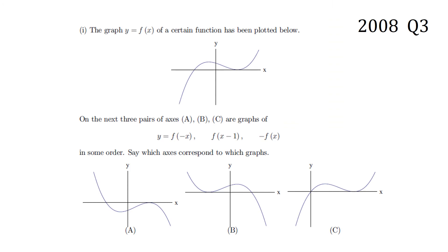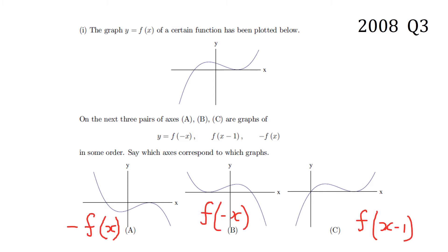Another longer question from the 2008 paper. Given a curve sketch of f(x), we must identify which of three graphs below corresponds to f(−x), f(x−1), and −f(x). These are three simple transformations: f(x−1) shifts right by one unit; −f(x) reflects in the x-axis; and f(−x) reflects in the y-axis.